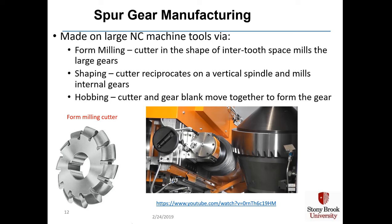In spur gear manufacturing, gears are made on large numerically controlled machine tools. There are three methods of production. The first is form milling, where a cutter in the shape of an inter-tooth space mills large gears — the cutters are essentially the mirror image of the gear teeth. The second is shaping, where a cutter reciprocates on a vertical spindle to mill internal gears. The third is hobbing, where both the cutter and the gear blank move together to form the gear. The photograph shown is of an actual hobbing operation.